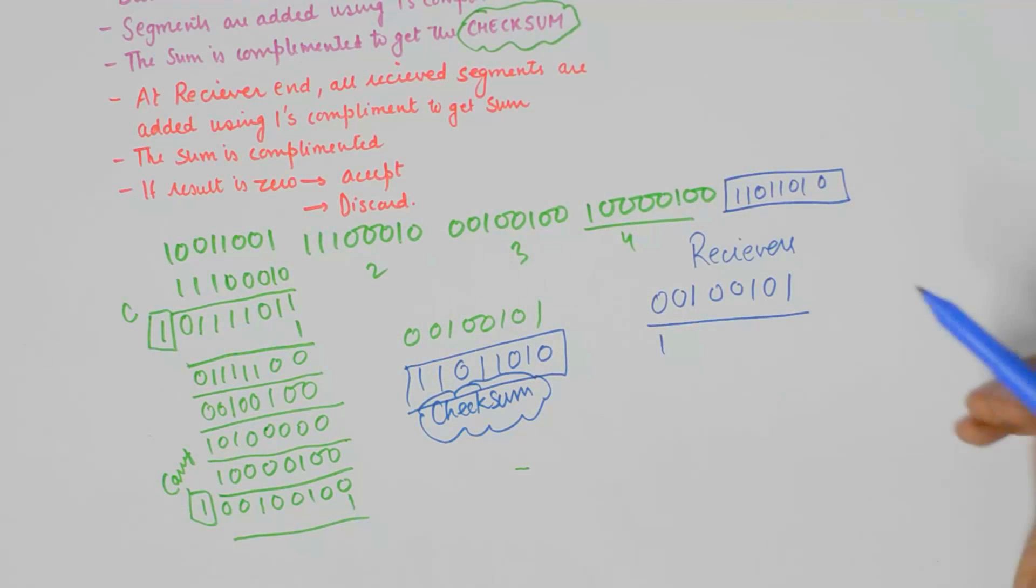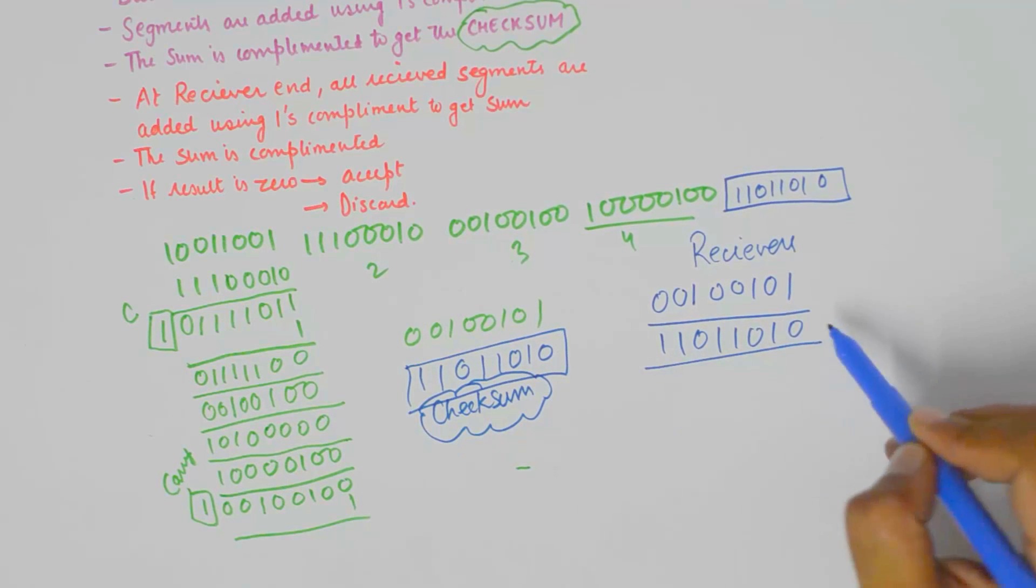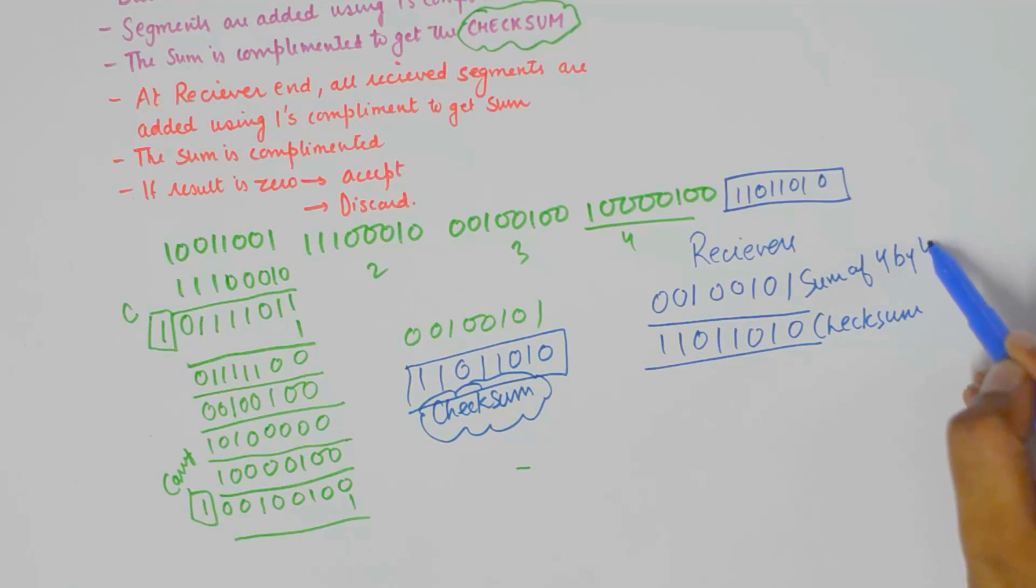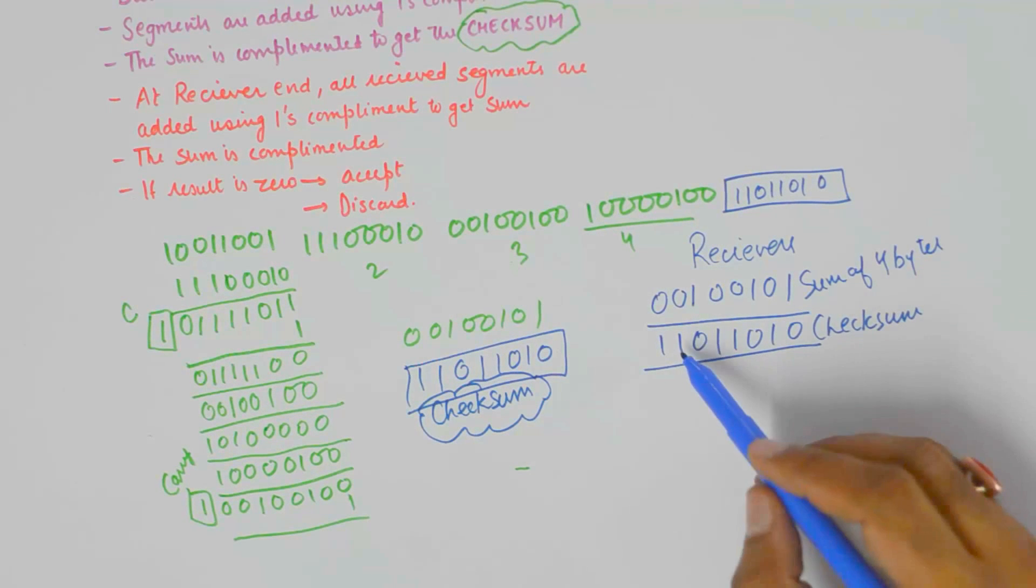Then, what we are going to do is, we are going to add checksum to it. This is checksum. This is sum of 4 bytes using 1's complement. So when checksum is added to sum of 4 bytes, it should give us a sum which should look something like this.